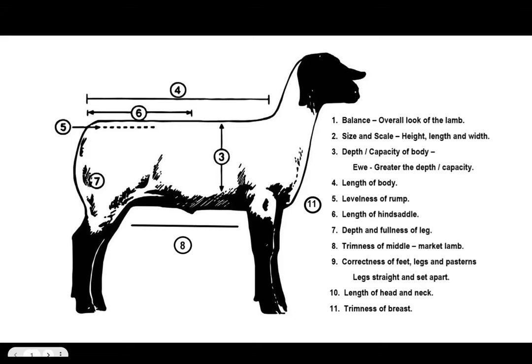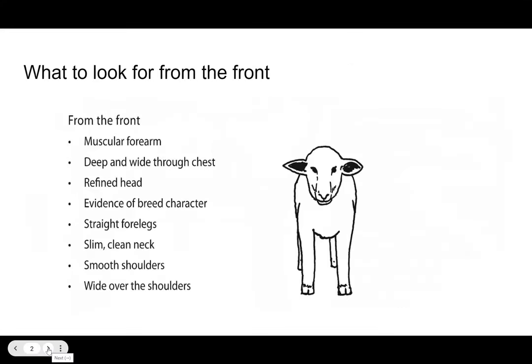Next slide: what to look for from the front. You want nice straight legs, and the head should be in balance with the body. You want to see some breed characteristics. There's a great resource from Alberta 4-H that lists characteristics of all the different breeds, which was given out when you started the lamb project.